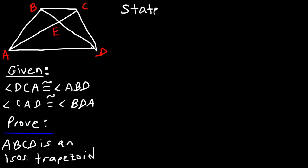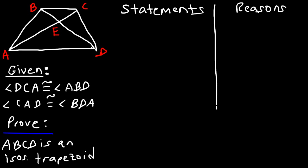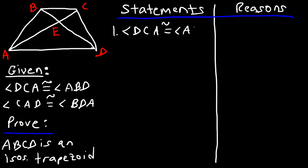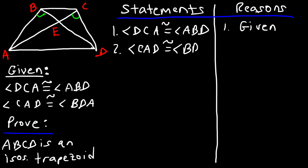Let's make a two-column proof. Statement 1 — angle DCA is congruent to angle ABD. That statement was given; let's mark it on the graph — this angle is congruent to that angle. Statement 2 — angle CAD is congruent to angle BDA. That is also given. Here is angle CAD and here is angle BDA.